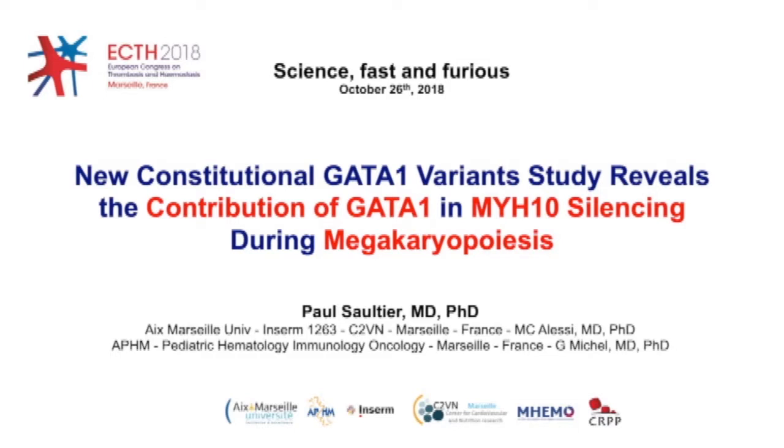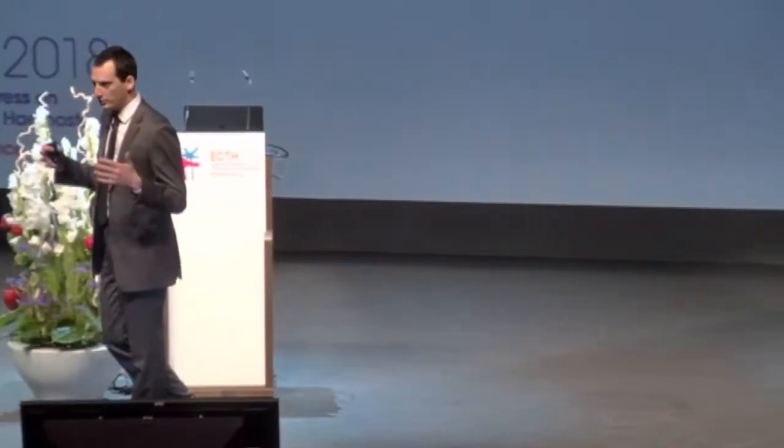The cells that produce platelets in the bone marrow are called megakaryocytes, and the number of platelets that are produced is dependent on the megakaryocyte mass. So in order to produce more platelets, the megakaryocyte has to get bigger. And it can get bigger by becoming polyploid — meaning its nucleus contains an unusually high amount of DNA compared with normal cells.